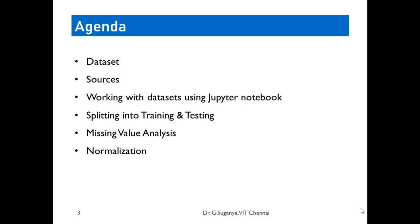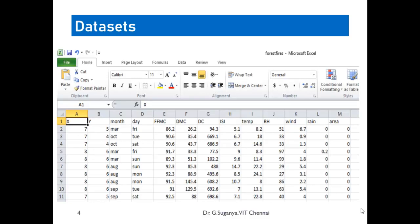We will also do two initial pre-processing activities: missing value analysis and data normalization. This is how a normal dataset looks — shown here in Excel format. Any dataset used in this course will generally be a CSV file or an Excel file, though JSON and tables are also usable. The attributes are always listed as a header of the file.